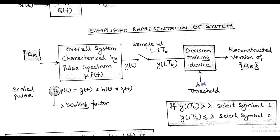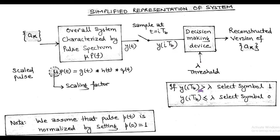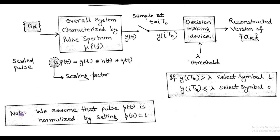If the input sampled value y is greater than λ, then symbol 1 is selected at the output. Also, when the input y is less than or equal to λ, then symbol 0 is selected. Accordingly, we get the reconstructed binary sequence a_k. We note that the pulse p(t) of the overall system is normalized by setting p(0) = 1.